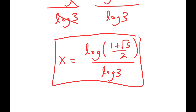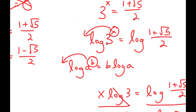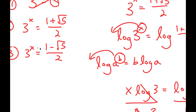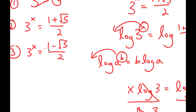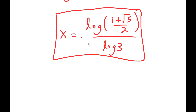This is a solution for x. For equation 3, notice that 1 minus the square root of 5 over 2 is a negative number, and you can't raise a positive number to a power and get a negative result. So there's no solution there, and the only solution is x equals log of 1 plus the square root of 5 over 2, divided by log 3.